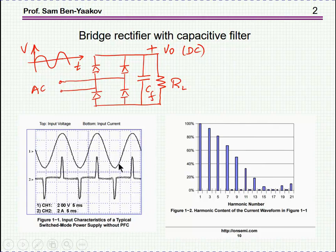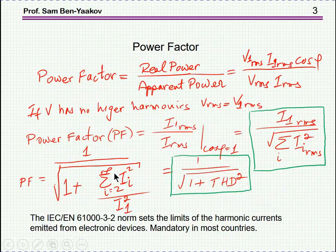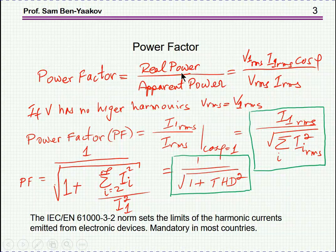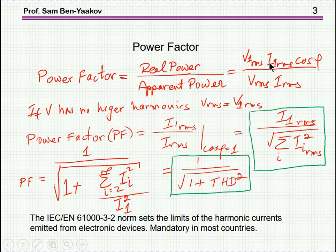Before going into the detail of how this can be done, let me define what power factor is, so we can understand the problem at hand. Power factor is defined as the ratio between the real power and the apparent power. Real power is the first harmonic of the voltage times the first harmonic of the current, times cosine phi, if there is a phase shift between these two. The total, or apparent, power is the RMS voltage times the RMS current.